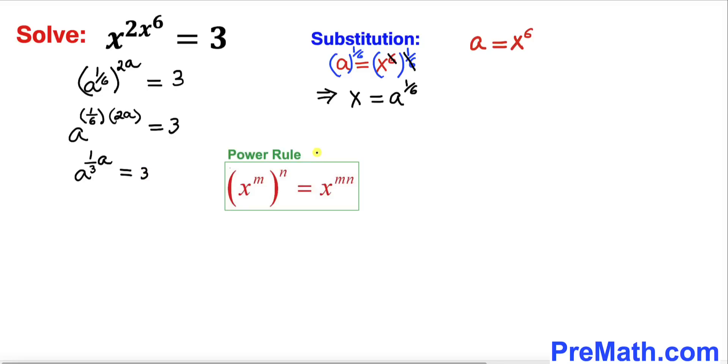And now let's go ahead and apply this power rule once again. So our left hand side could be written as a power 1 over 3 plus 1 equals to 3.